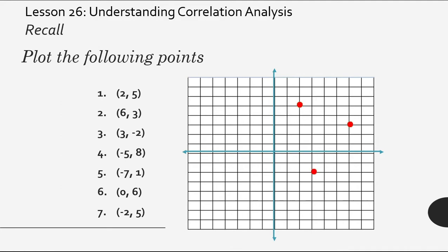Negative 5, 8. Very good, that's quite high. How about negative 7, 1? There. Next, 0, 6. Along the, very good, x-axis. Of course, 0, 6.